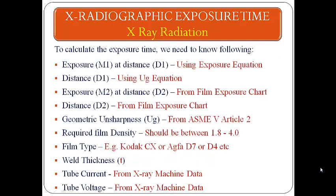To calculate the expiry time we need to know: expiry M1 at distance D1 using the expiry equation; distance D1 using the UG equation; expiry M2 at distance D2 from the film expiry chart; distance D2 from the film expiry chart; geometric unsharpness from ASME 5 Article 2; required film density (which should be between 1.8 and 4.0); and film type, for example Kodak CX, FFD7, or D4.